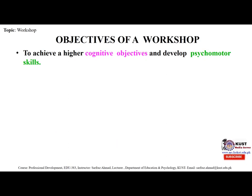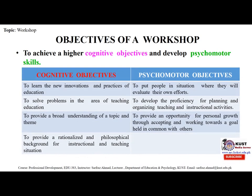Now there are some objectives of workshop: to achieve higher cognitive objectives and develop psychomotor skills. In cognitive objectives, the first is to learn new innovations and practices of education; the second is to solve problems in the area of teaching and education; the third is to provide a broad understanding of the topic and theme; and to provide a rationalized and philosophical background for instructional and teaching situations. In psychomotor objectives: to put people in situations where they will evaluate their own efforts; to develop proficiency for planning and organizing teaching and instructional activities; and to provide an opportunity for personal growth through accepting and working toward a goal held in common with others.